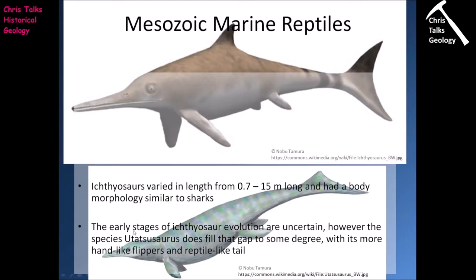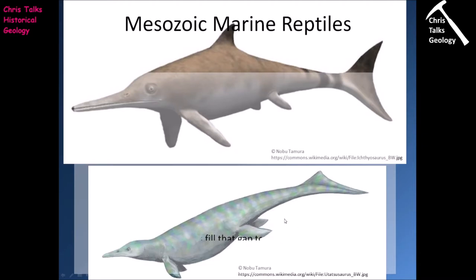The early stages of ichthyosaur evolution are relatively uncertain. However, there is one species, Ichthyosaurus, that does seem to fill the gap to some degree. We can see the forelimbs and hindlimbs have adapted to form flippers, and we can begin to see the elongation of the skull.